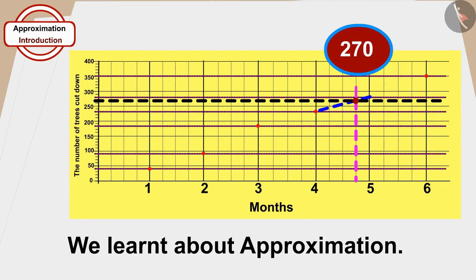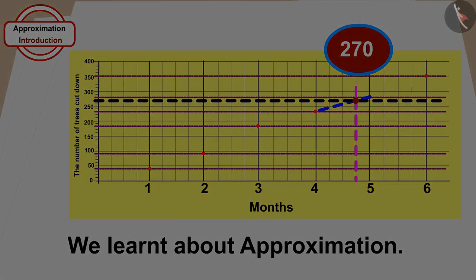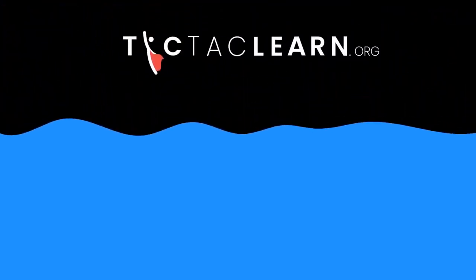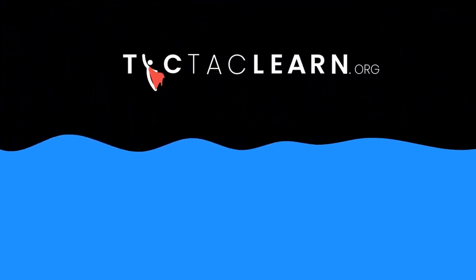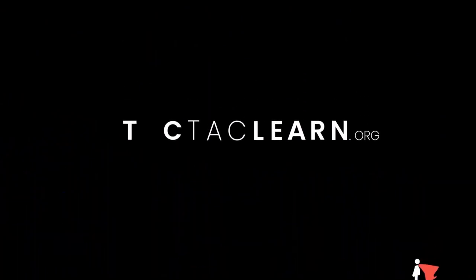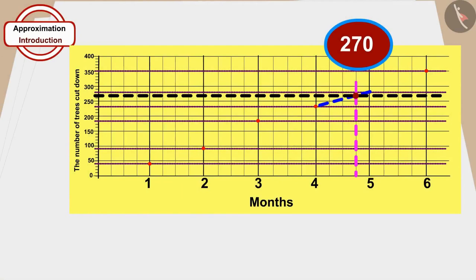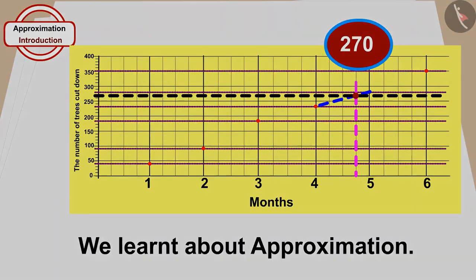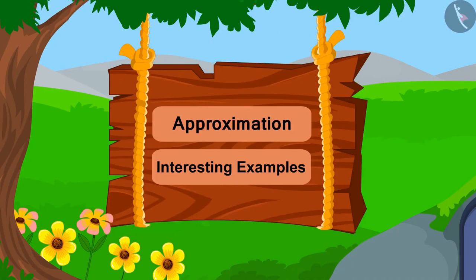Toofan gathered all the villagers and showed them the chart. All the villagers understood what Toofan said and together decided not to cut any more trees. Children, in this video we learnt about approximation. In the next video, we will learn some more about it through some interesting examples.